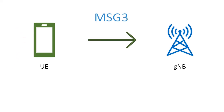Message 3 is transmitted through the PUSCH. Message 3 is the starting point of the RRC setup procedure — this is the RRC Setup Request message. The RRC plays a very important role in communication between the UE and gNodeB. It controls all the radio resources like the physical layer, MAC, RLC, and PDCP. Now it starts this RRC procedure.